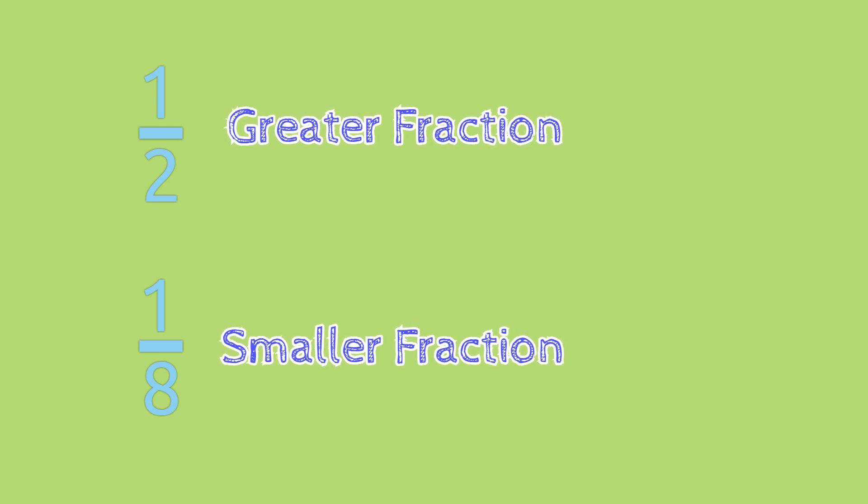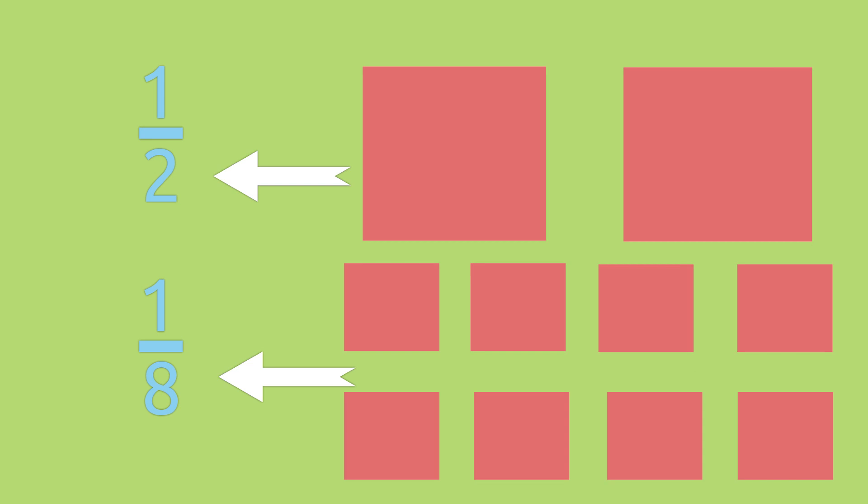Let's take a closer look at this example. Since our denominator is two in one-half, we need to partition our whole into two equal parts. In the fraction one-eighth, we need to partition our whole into eight equal parts.